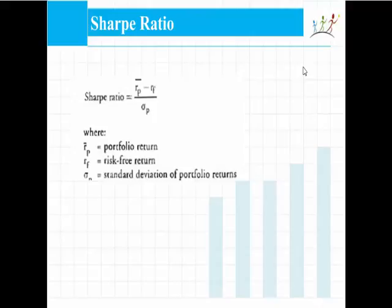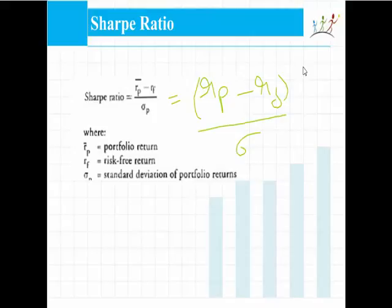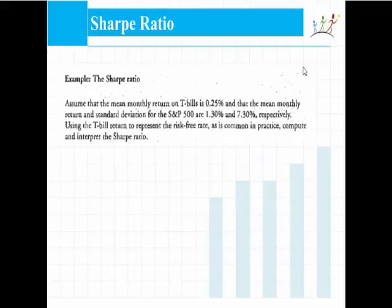An inverse of the coefficient of variation is called the Sharpe ratio. The Sharpe ratio is defined as the excess return per unit of risk, where excess return is defined as the return on the portfolio minus the risk-free rate. The monthly return on T-bills is 0.25%, and the mean monthly return and standard deviation for the S&P 500 are 1.3% and 7.3% respectively. Using the T-bill return to represent the risk-free rate, the Sharpe ratio equals the return on the portfolio minus the risk-free rate, divided by the standard deviation of the portfolio.